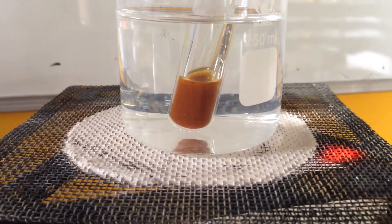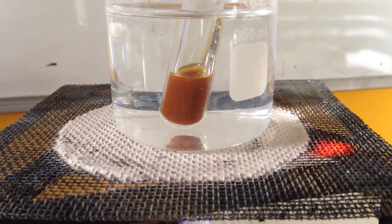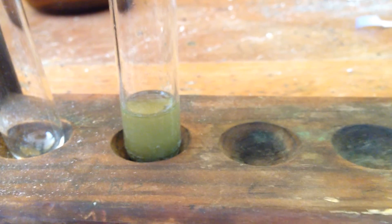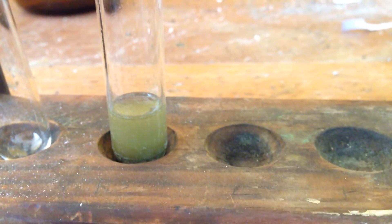Now we can start to see the red color coming through. So this is the result of our test with Fehling's solution.